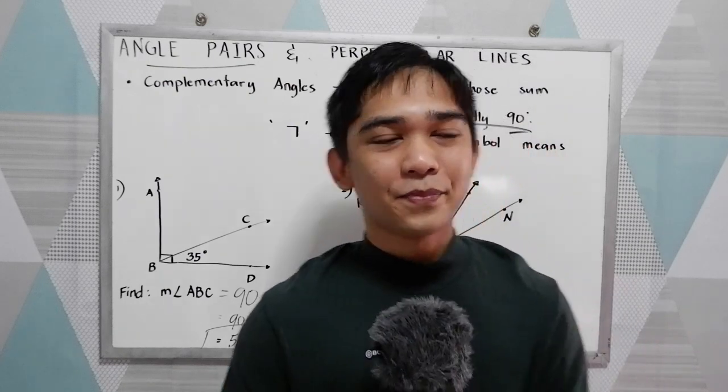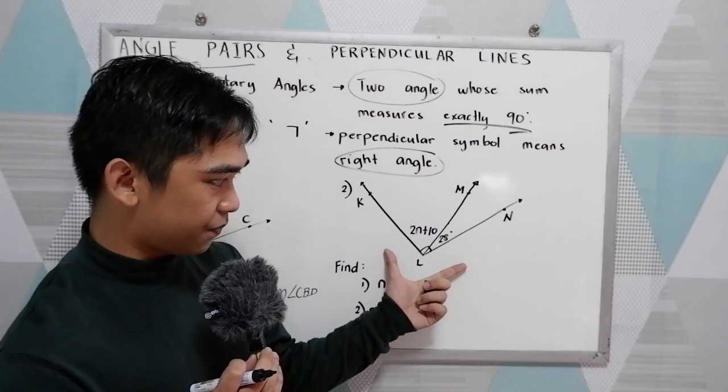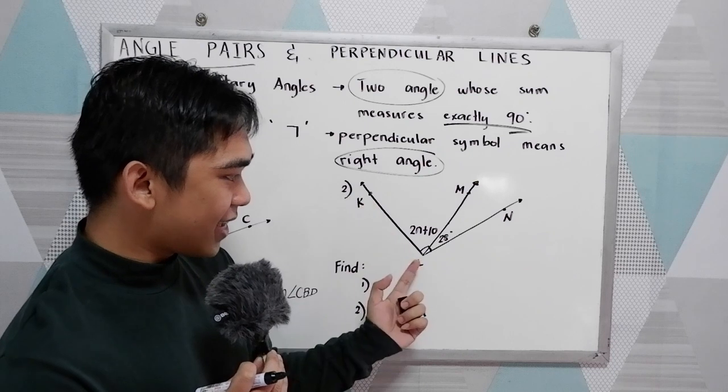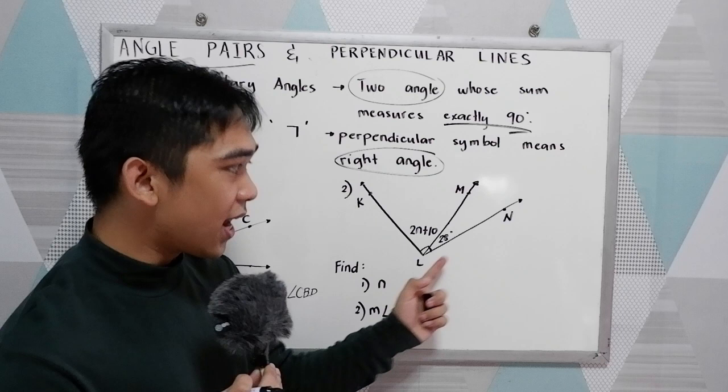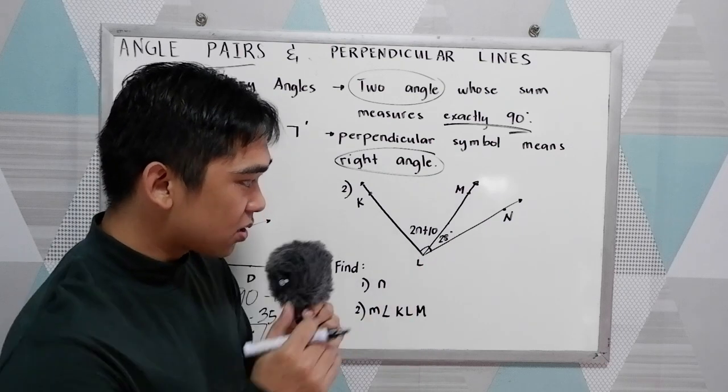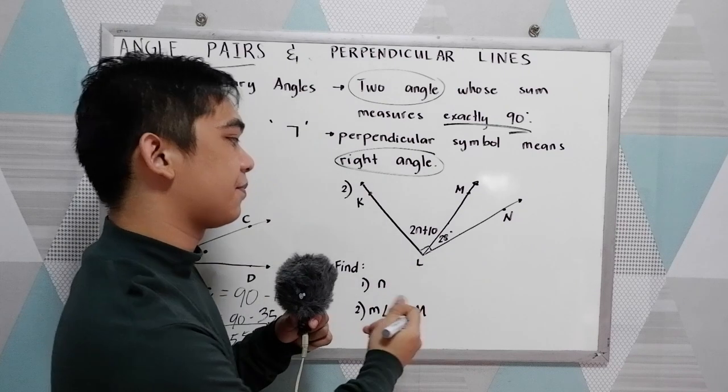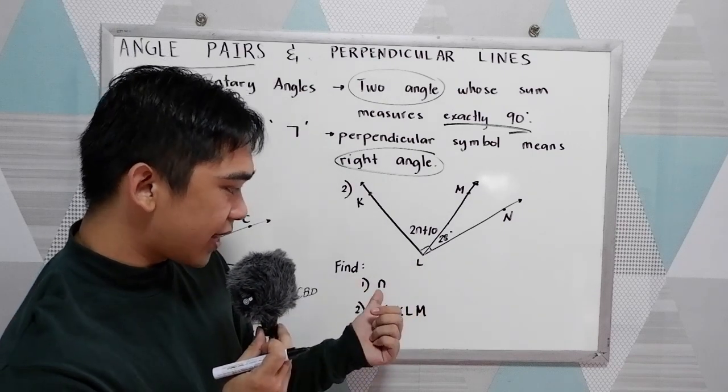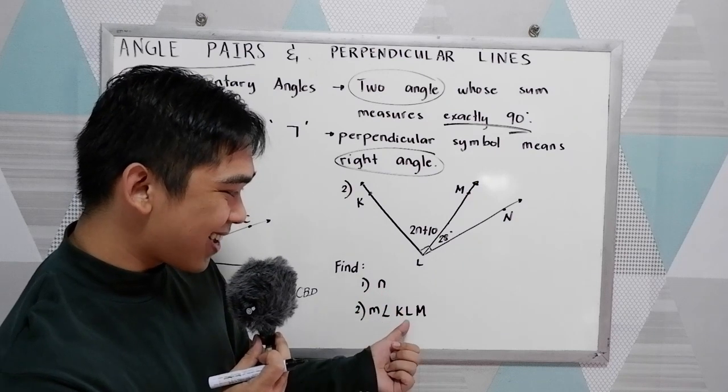Next example. Let's say we have this illustration. So we have angle KLM. The sum or the measure of angle KLM is 90 because we have a perpendicular line here.